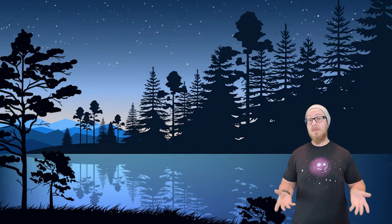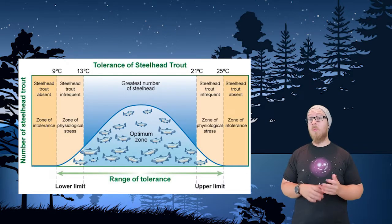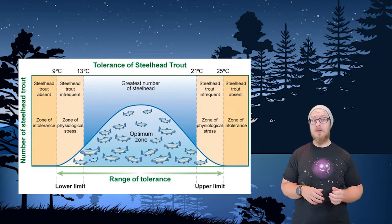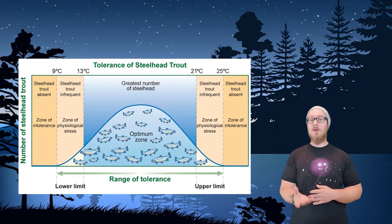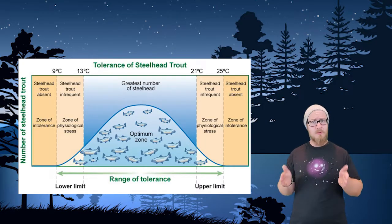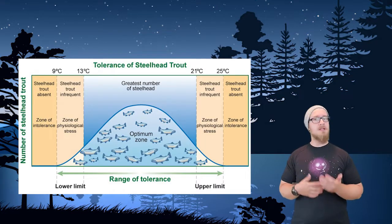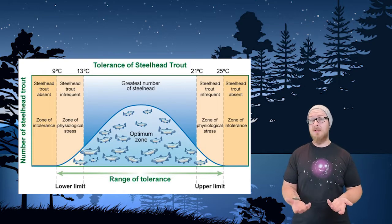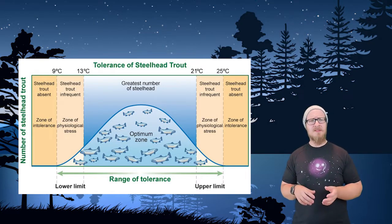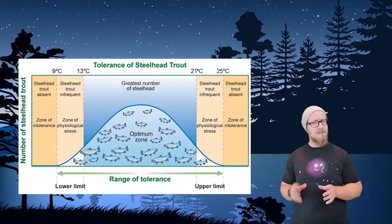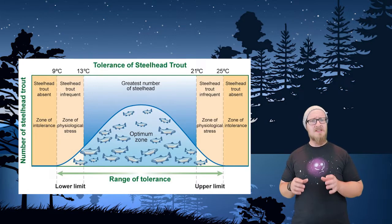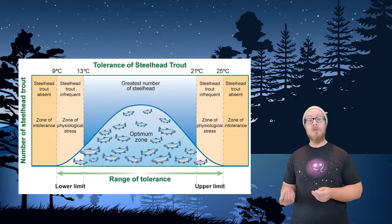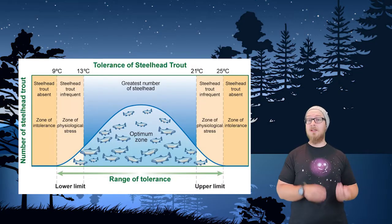Here's an example of a tolerance curve for water temperature for a steelhead trout. We see that there is an optimal zone where all the individual members of the species do best. Notice, however, that there are individuals of this species that can survive in much colder and much warmer conditions.